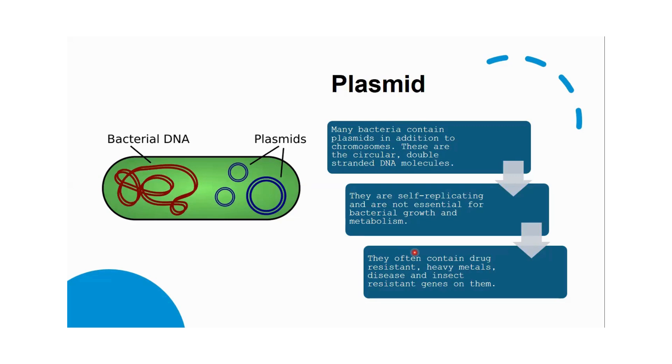Plasmids: In different types of bacteria, a separate copy of DNA is present known as a plasmid. Basically, these are circular double-stranded DNA molecules.